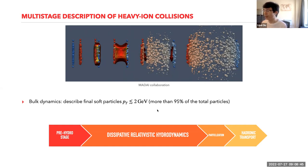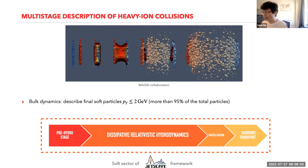In practice, different codes model different stages and pass their output as input to the next code. We need to run millions of events for high statistics. This is why we use the JETSCAPE framework, which has built-in interfaces between different stages and default modules for each stage. We will use those modules in today's session, focusing on the soft sector to describe soft particles.